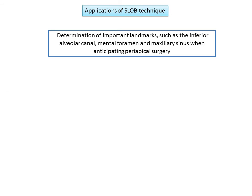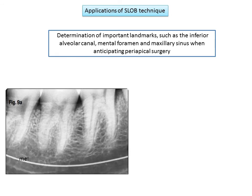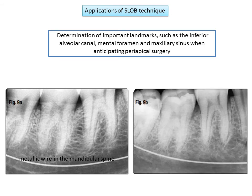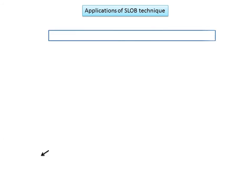The SLOB technique helps localize important landmarks such as the inferior alveolar canal, mental foramen, and maxillary sinus when anticipating periapical surgery. In a dried mandible example, a metallic wire introduced in the mandibular canal demonstrates that with greater coronoapical angulation, the canal is confirmed to be more lingual with respect to the apices of the second and third molars.